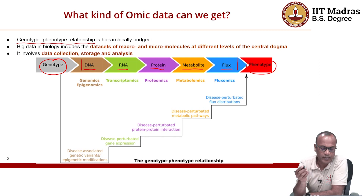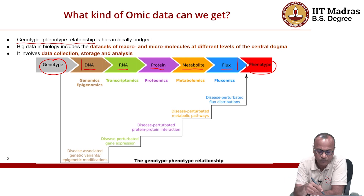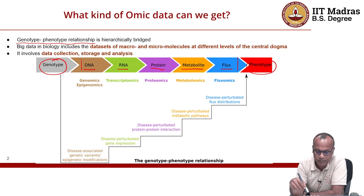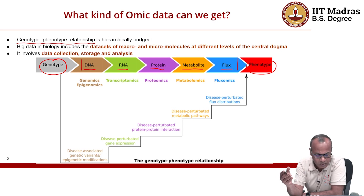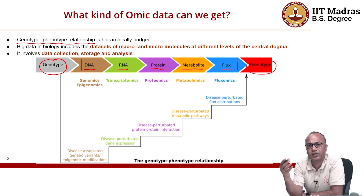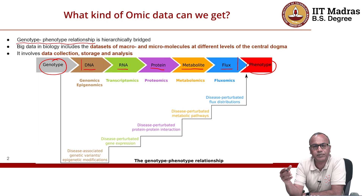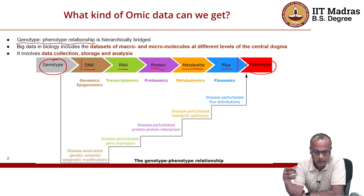Big data in biology essentially includes both the macromolecules and micromolecules present at each of these five different levels of the central dogma — three primarily: DNA, RNA, and protein, and two additionally. Big data usually involves data collection, which we will briefly discuss, and we will also discuss how it is analyzed. The later part of the course, taken by other faculty, will cover the mathematical basis of how the analysis is done.